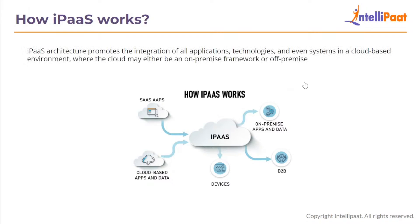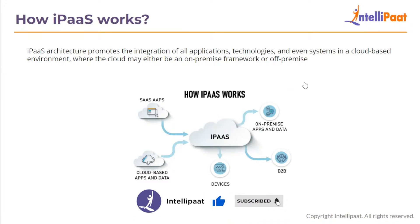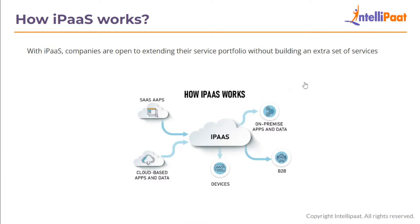IPaaS architecture promotes the integration of all applications, technologies and systems in a cloud-based environment, where the cloud may either be an on-premise or off-premise framework. IPaaS allows deployment of the integration process without any external hardware or middleware by a software company or an individual user. With IPaaS, companies are open to extending their service portfolio without building an extra set of services, by integrating the already existing software to deliver the required service.